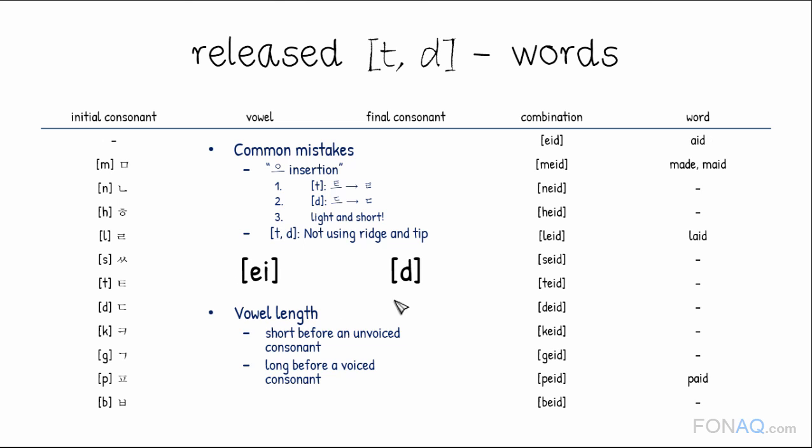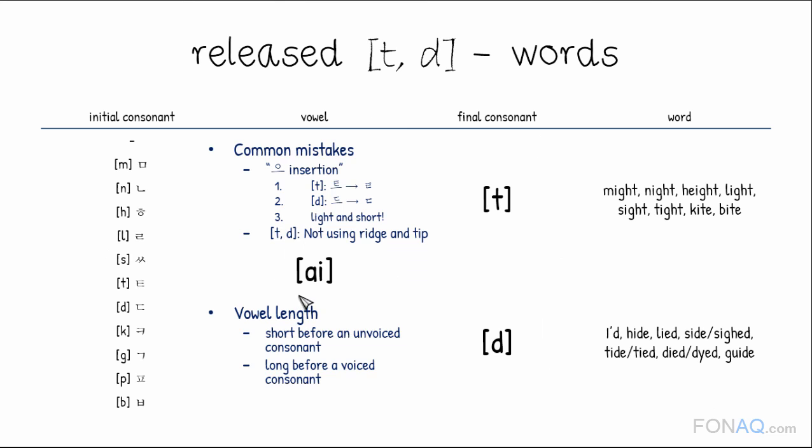Vowel a with d: aid, made, laid, paid. Vowel i with t and d: might, night, height, light, sight, tight, kite, bite.